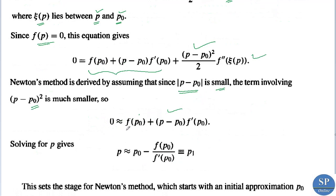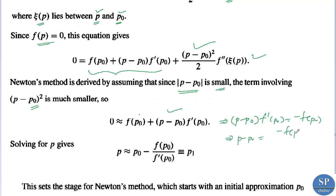Solving for p from this equation, we have (p - p₀)·f'(p₀) = -f(p₀), so p - p₀ = -f(p₀) / f'(p₀), and therefore p = p₀ - f(p₀) / f'(p₀). This will be the first approximation.